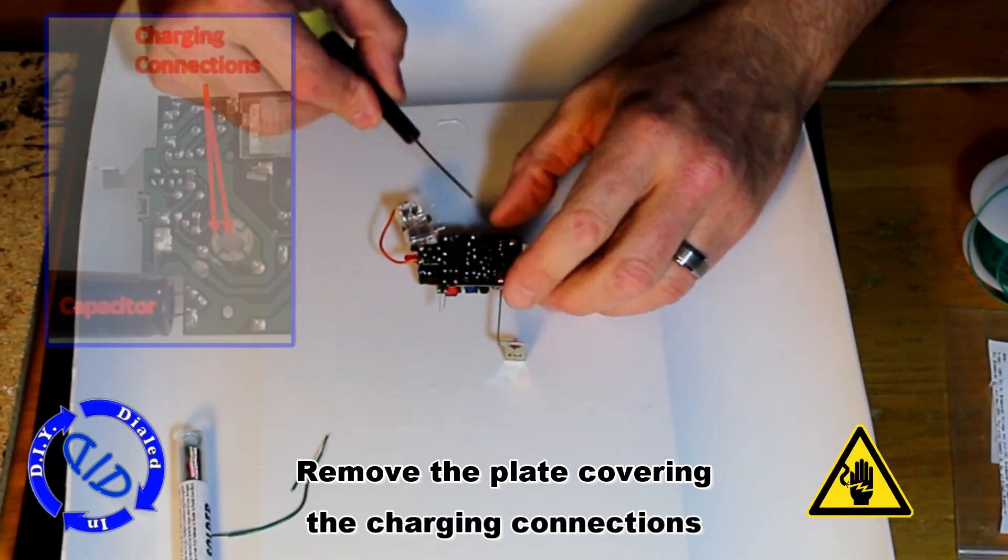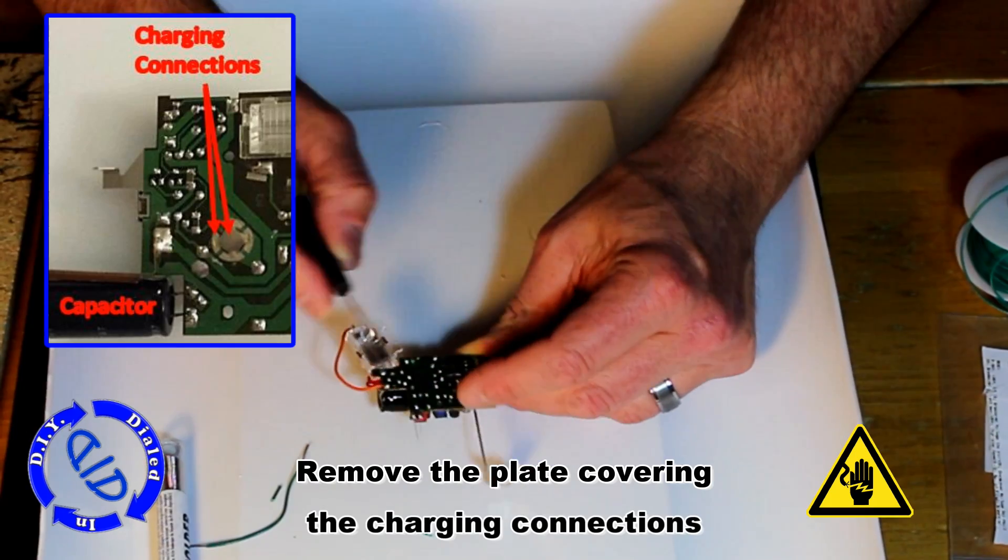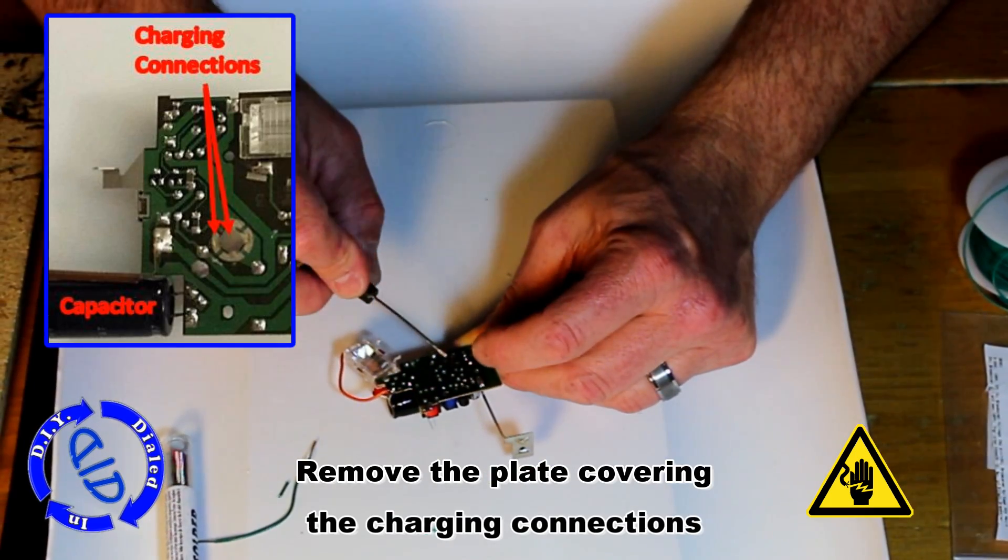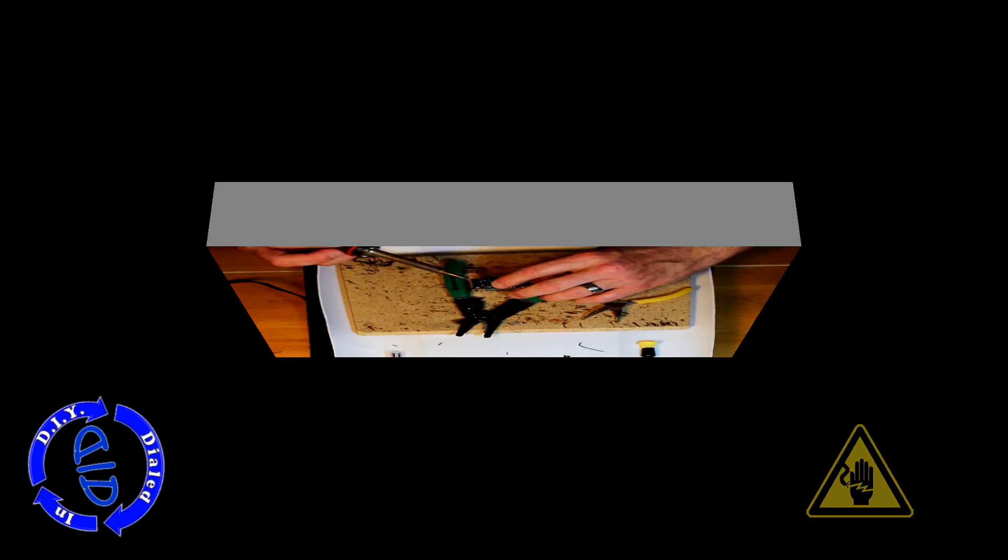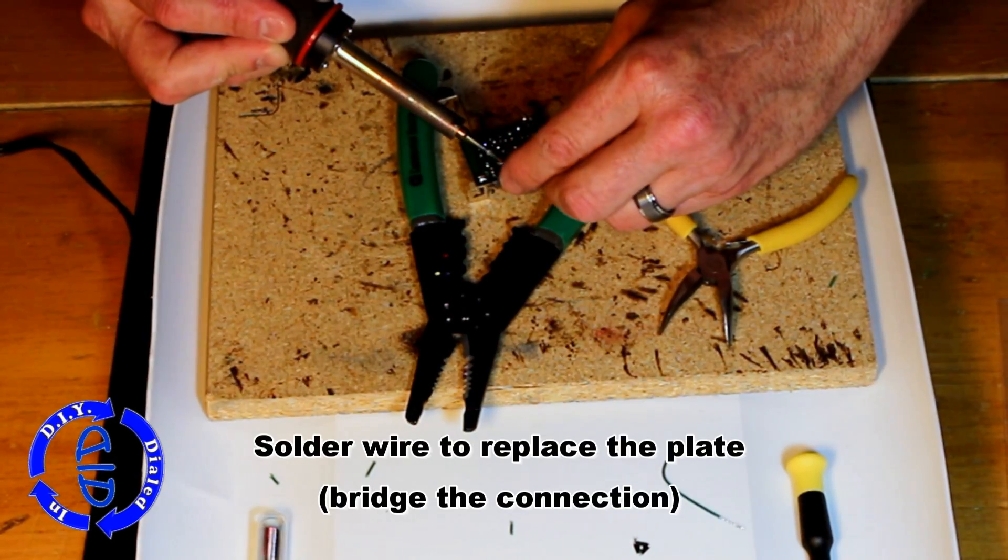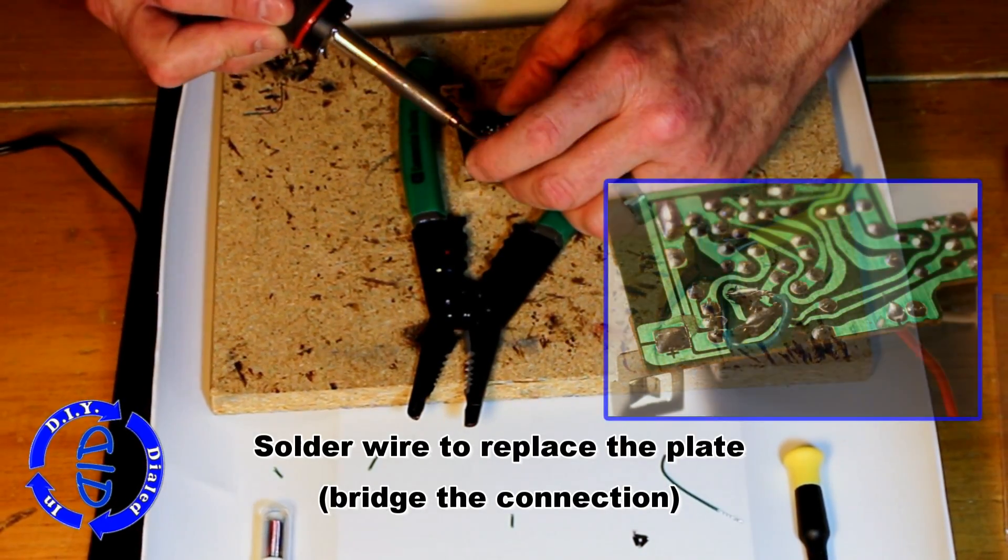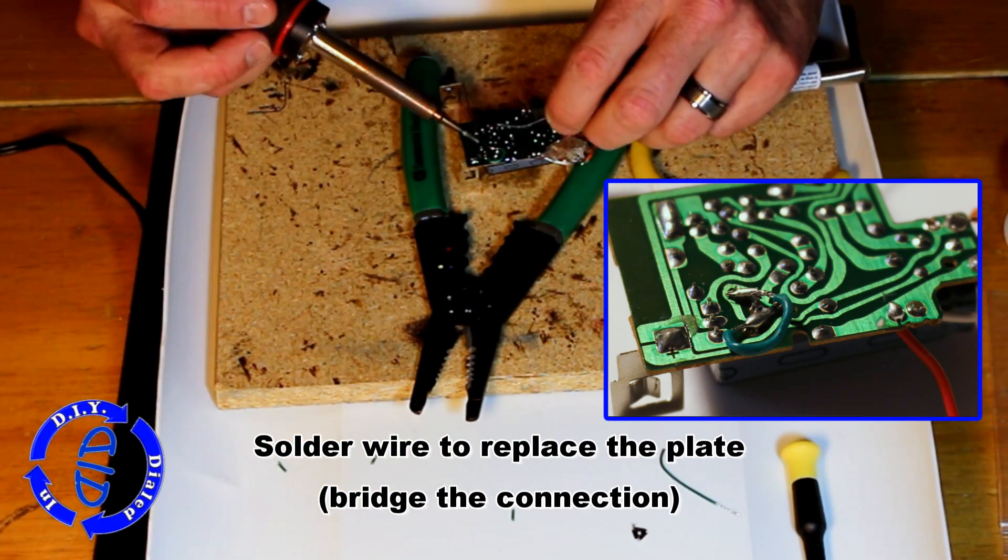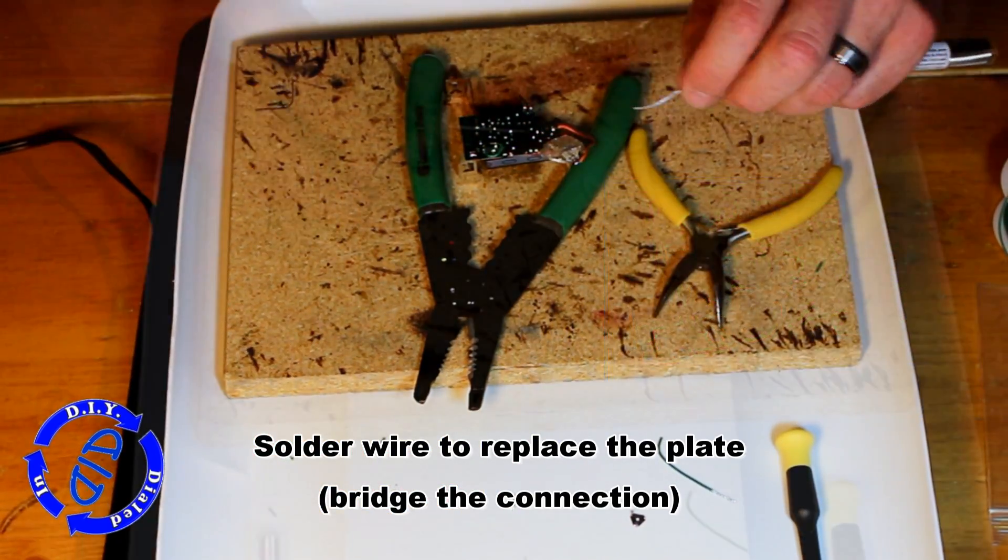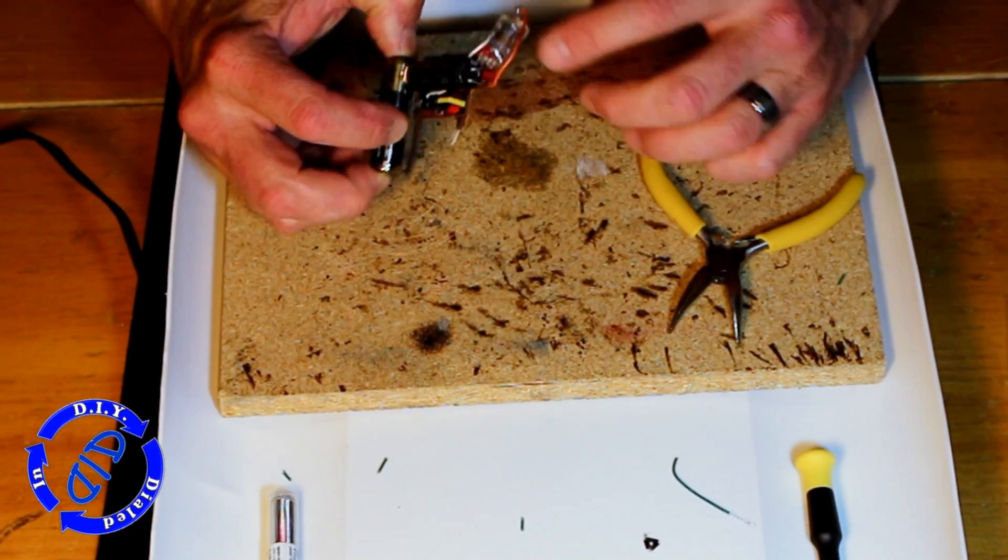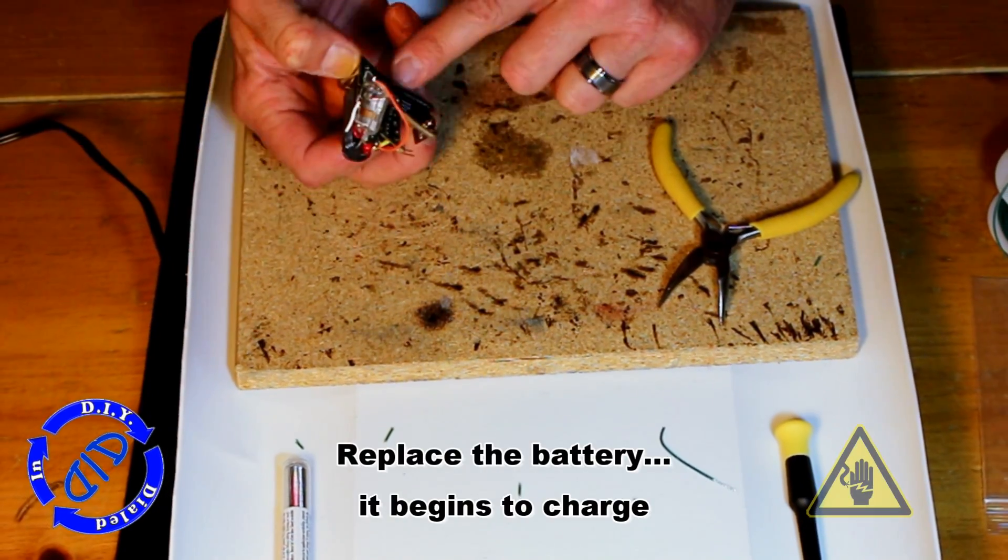Once you have the circuit in hand, we're going to start by taking off the charging connection. That's that little button you push down on a flash camera to get the flash charged up. It's actually just a little piece of metal, and it comes off pretty easily with a little screwdriver or something like that to pry it up. Once it's off, we're going to actually solder back over that, put a piece of wire or something like that just to complete that connection. You can actually take that little plate you took, turn it upside down, and glue it in place if you need to.